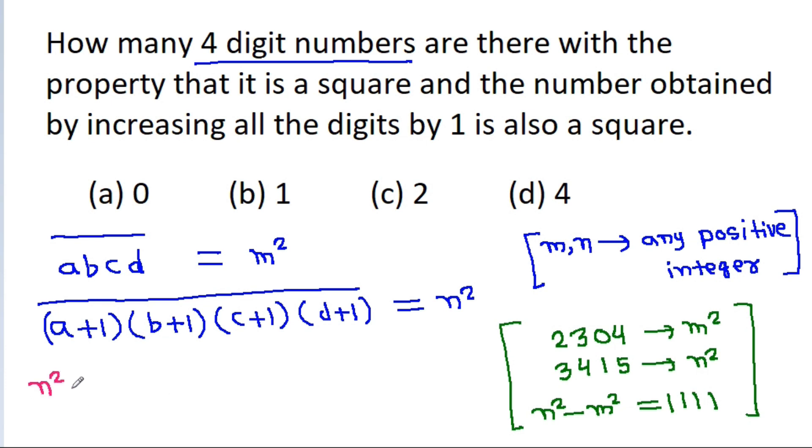That means N squared minus M squared will be equal to 1111 for any value A, B, C, D.